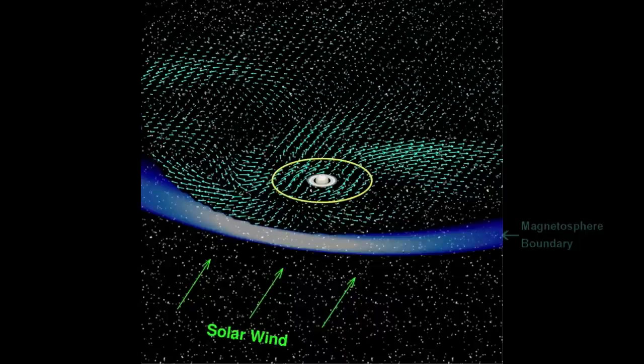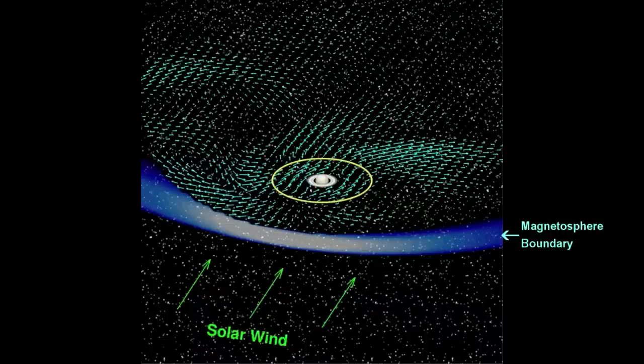The blue and white region shows the magnetospheric boundary as the solar wind, represented here by green arrows, pushes on Saturn's magnetosphere.